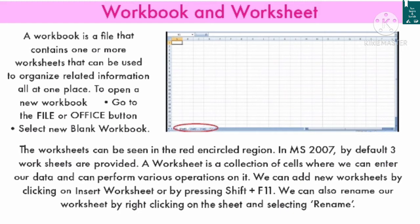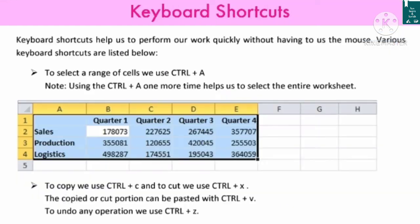We can also rename our worksheet by right-clicking on the sheet and selecting the name. Keyboard shortcuts help us to perform our work quickly without having to use the mouse. To select a range of cells we use Ctrl+A. To copy we use Ctrl+C, to cut Ctrl+X, to paste Ctrl+V, and to undo any operation we use Ctrl+Z.